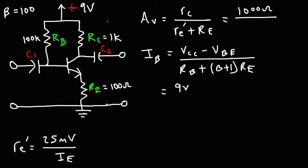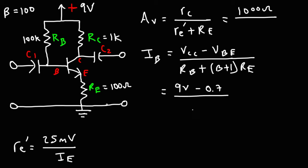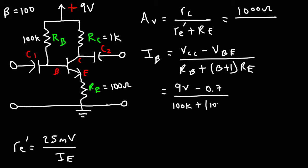VCC, the collector supply voltage, is 9 volts. VBE, the voltage between the base and the emitter of the transistor, is typically 0.7 volts. The base resistor RB is 100 kiloohms. Beta for this transistor is 100, so beta plus 1 is 101.